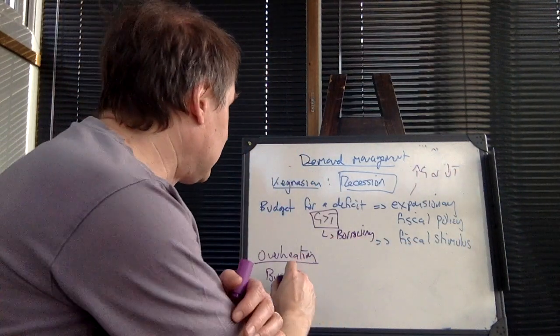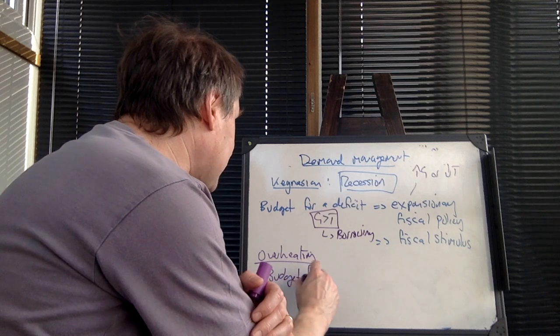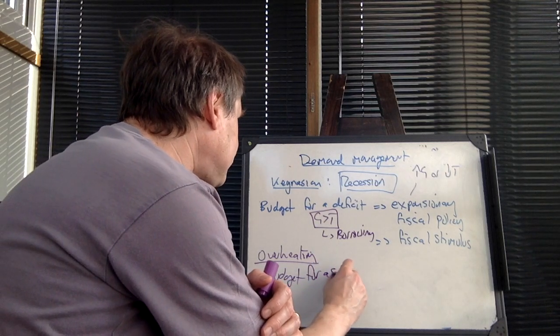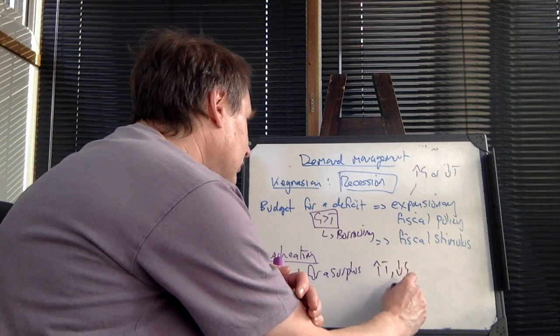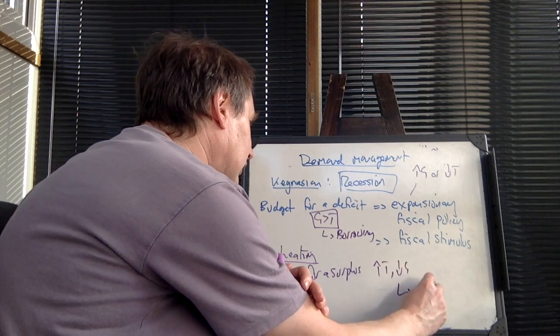Whereas if the economy is overheating, then what you can do is budget for a surplus. So you're going to increase tax and decrease government spending with the aim here of reducing aggregate demand.